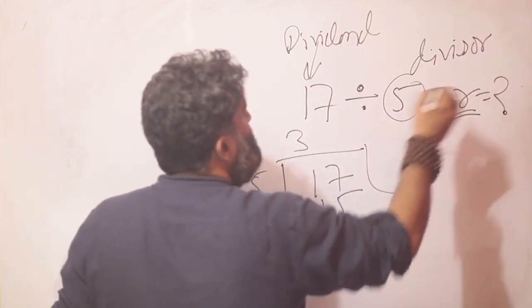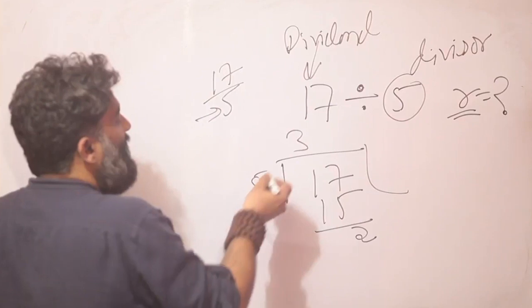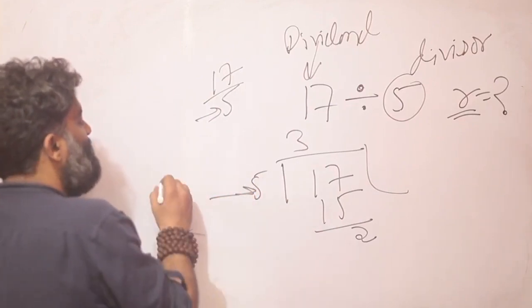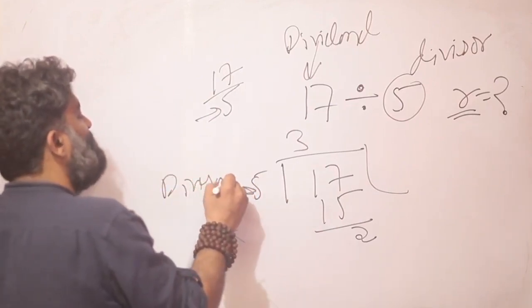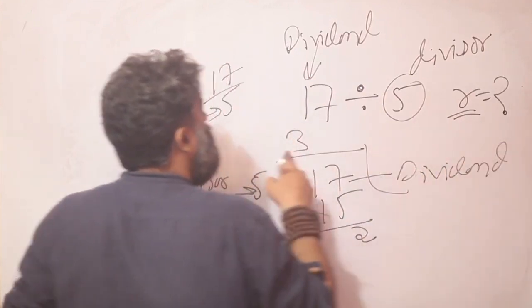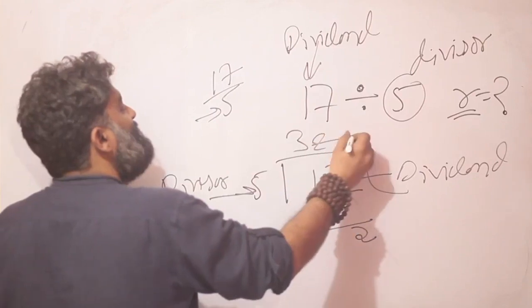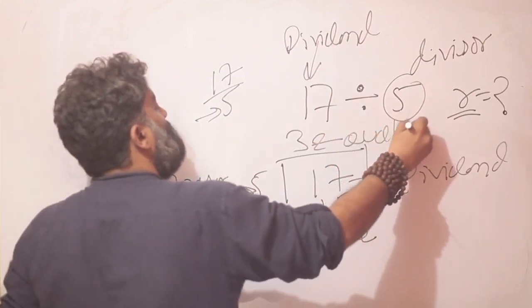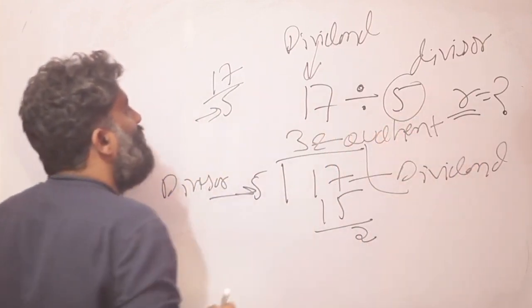We already know remainder is what we are looking for, right? So this term 5 is my divisor, this is my dividend. So what would be this? This is the quotient.